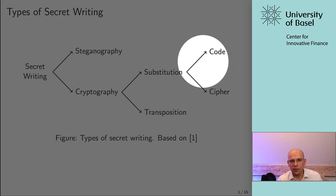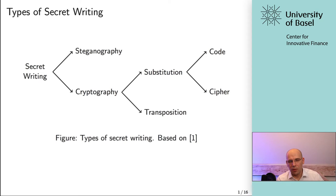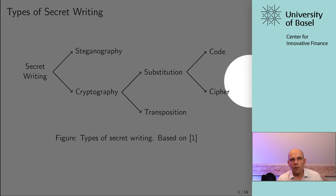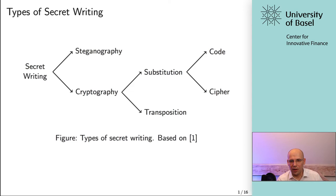Within substitution, you again have two different branches. You have code — usually when you just have individual words that get substituted, so you have a dictionary where one word gets mapped to another, with a huge list of word substitutions. With a cipher, it's usually individual letters, or in the case of computers, it can be at the bit level — very low-level substitution. That's what we refer to as a cipher. And that is by far the most interesting and most used one, because with a cipher you just have certain rules — a rule set — for how to map something from the plain text to the cipher and vice versa.